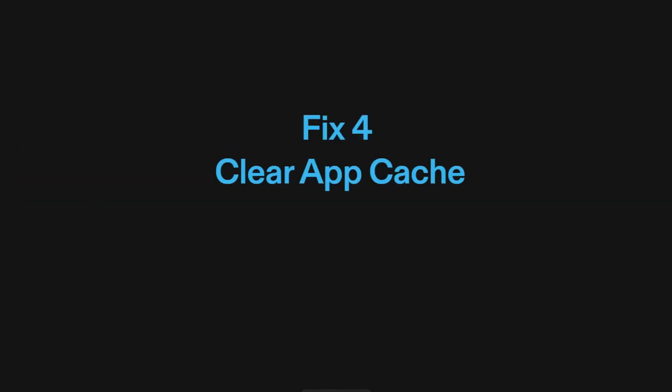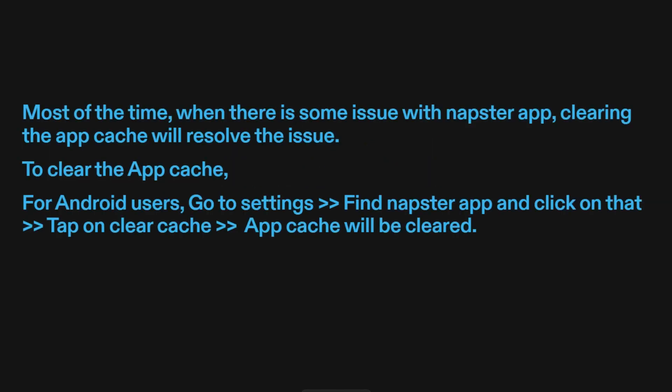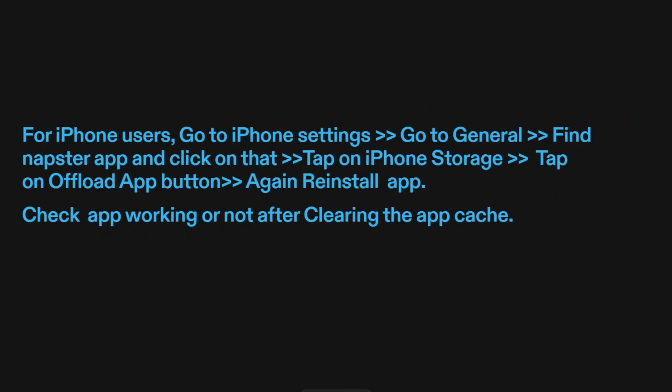Fix 4: Clear app cache. Most of the time, when there is some issue with the Napster app, clearing the app cache will resolve the issue. For Android users, go to Settings, find the Napster app, tap on it, and then tap on Clear Cache. For iPhone users, go to iPhone Settings, then General, find the Napster app, tap on iPhone Storage, tap the Offload App button, and then reinstall the app. Check if the app is working after clearing the app cache.